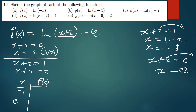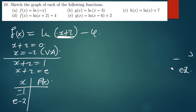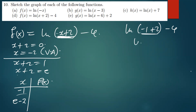Plug in x equals negative 1: f(negative 1) = ln(negative 1 + 2) − 4 = ln(1) − 4 = 0 − 4 = negative 4. So the first point is (negative 1, negative 4).